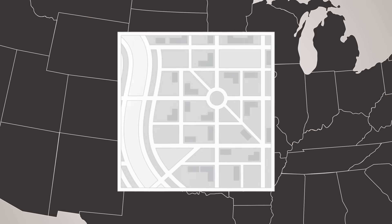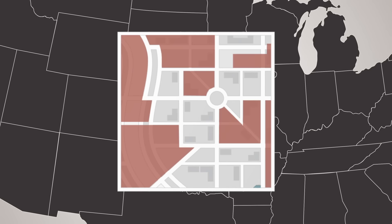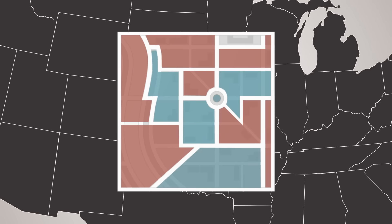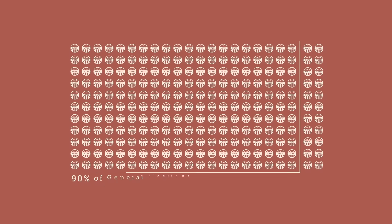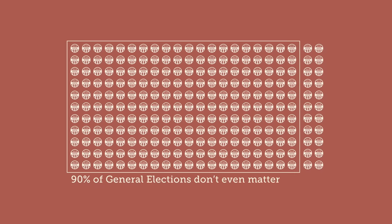Gerrymandering, for example, is when legislators draw districts so that the seat is safe for one party or the other. And as a result of this party protection scheme, over 90% of elections are decided during the primary. So the general election doesn't really matter.